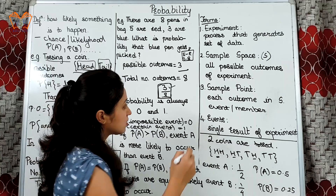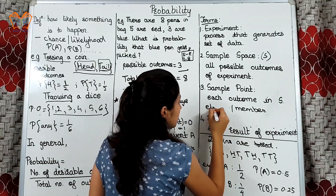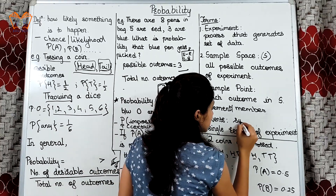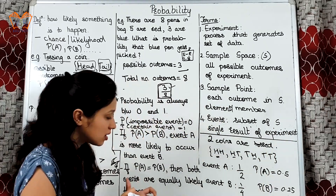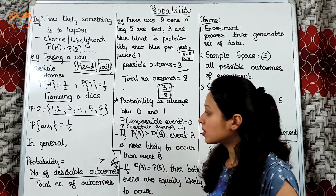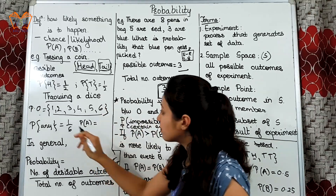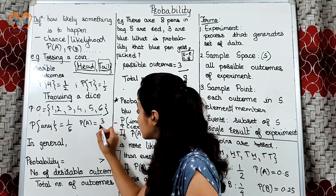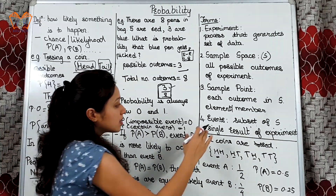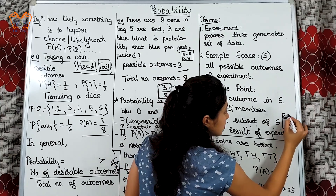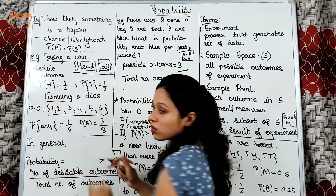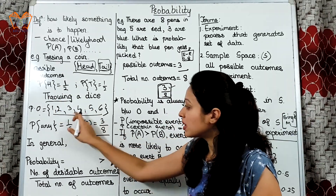Moving on to the last term: events. Those are a single result of an experiment, or more precisely, a subset of the sample space, or subset of S. Suppose a dice is thrown and we have an event that gives even numbers. So event A consists of 2, 4, 6 — those are the desirable outcomes, giving a probability of 3 by 6. This is nothing but the event as a subset of the sample space. This event can consist of a single sample point or multiple sample points — for example, the probability of getting a head is 1 by 2, giving a single sample point, whereas the even-number event gives multiple sample points.